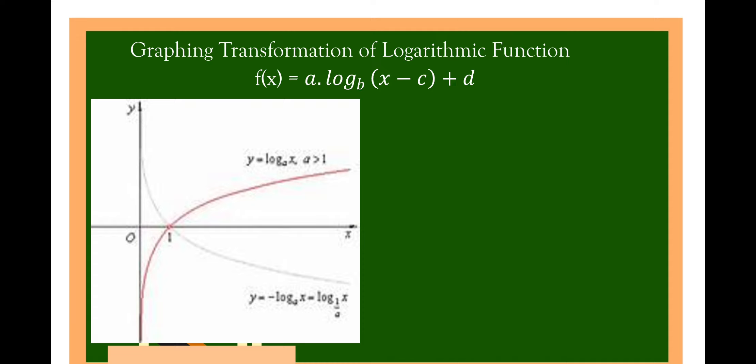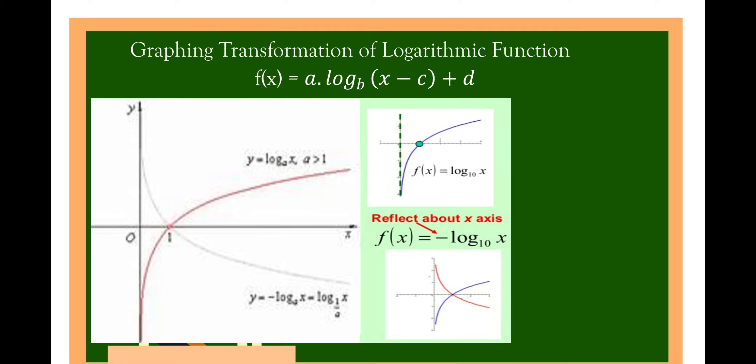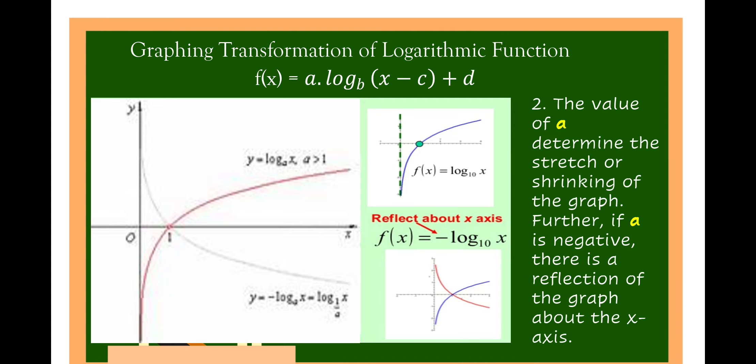What about if the logarithm is positive and negative? If the logarithm is positive and there is a negative, then it is a reflection about the x-axis. For example, f(x) is equal to log of x to the base of 10, and the negative log of x to the base of 10 reflects about the x-axis. The value of a determines the stretch or shrinking of the graph. If a is negative, there is a reflection of the graph about the x-axis.